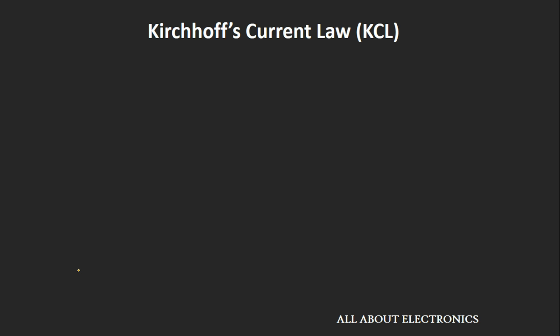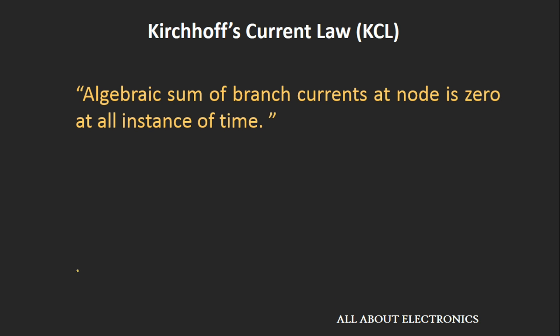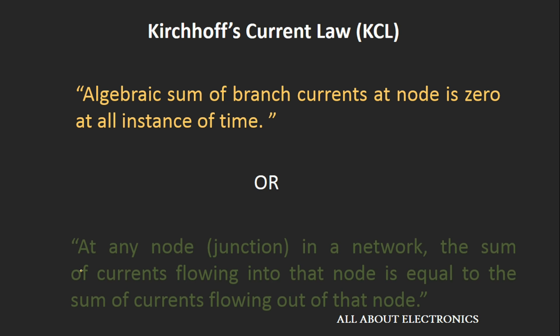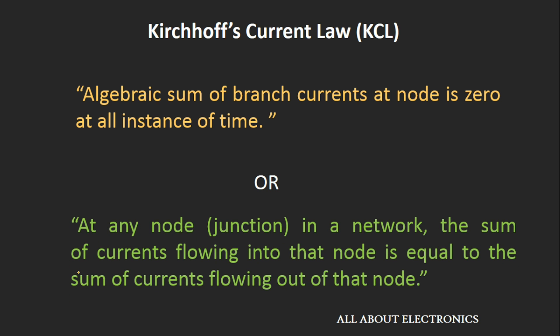According to Kirchhoff's Current Law, the algebraic sum of all the branch currents at a given node is zero at all instants of time. Or in simple terms, at any node or junction in the network, the sum of the currents flowing into the node is equal to the sum of the currents flowing out of that node.